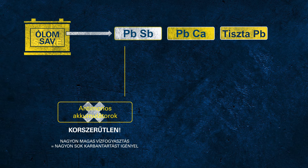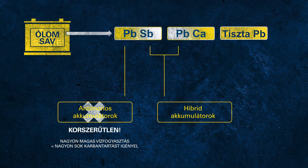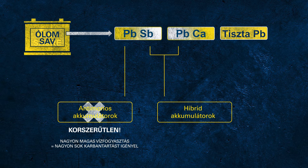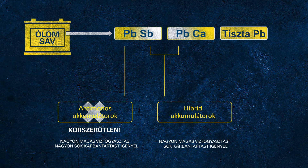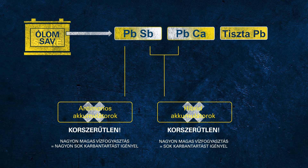The next step in development was the so-called hybrid batteries. In this case, hybrid indicates that one grid was still made of PBSB but the other one was made of lead calcium alloy. Even these batteries had lower water loss compared to antimony batteries, but they still demand regular checks of electrolyte and topping up with distilled water.